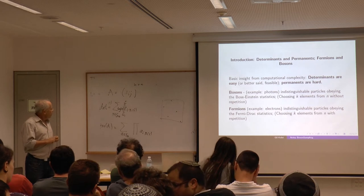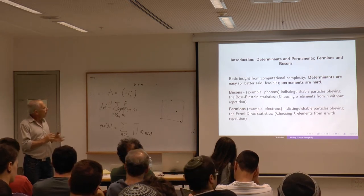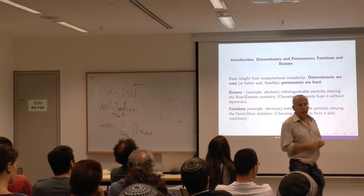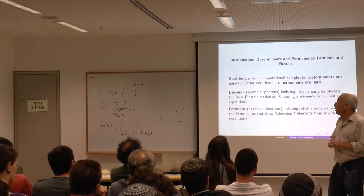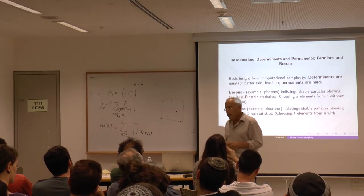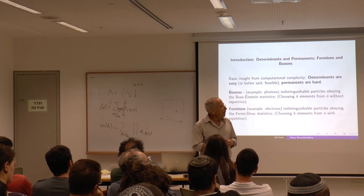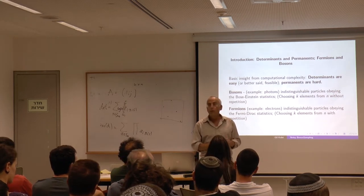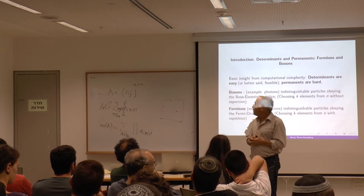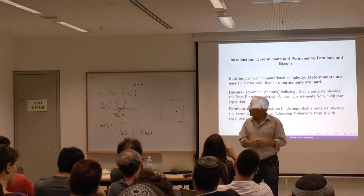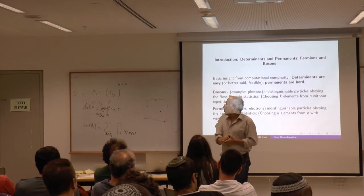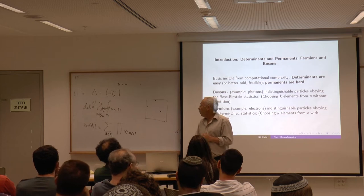There is a whole computational complexity class called #P which reflects the hardness of computing the permanent. It is known that computing the permanent is even harder than the so-called polynomial hierarchy. There is a lot of work about permanents. One miracle in our academic life is that it was discovered that it's easy to approximate the permanent of positive matrices. This was achieved in two steps: in 1990, Jerrum and Sinclair proved it for dense positive matrices, and then ten years later, with Vigoda, they did it for the general case.